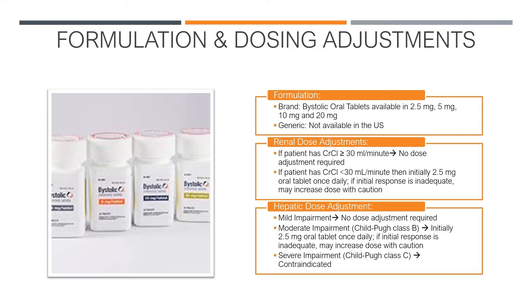For renal dose adjustments, if the patient has a creatinine clearance of greater than or equal to 30 mL per minute, then no dose adjustment is required. But if the patient has a creatinine clearance of less than 30 mL per minute, then initially 2.5 mg oral tablet of Bystolic should be given once daily. If the initial response is inadequate, they may increase the dose, but with caution.